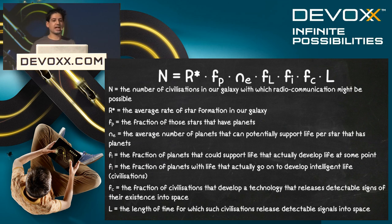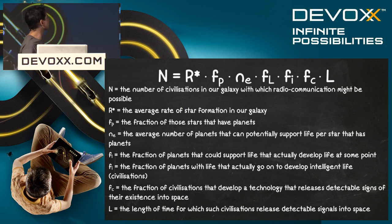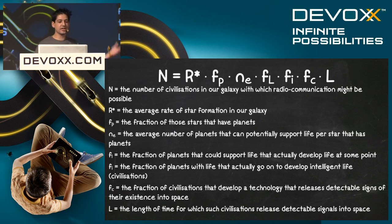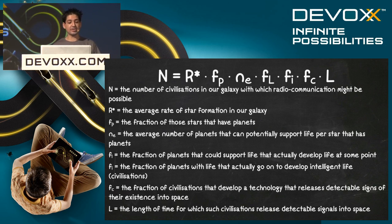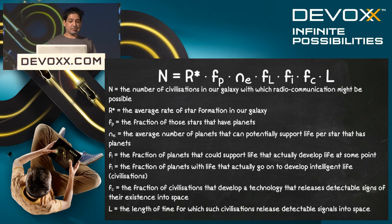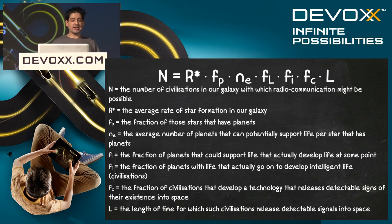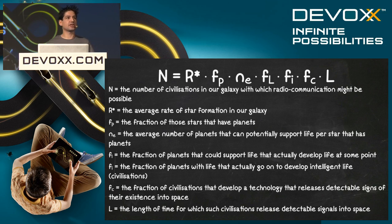A couple of decades ago, they came up with this idea called the Drake Equation — a lovely long string of things. N is the number of civilizations, the rate of stars, and so on. Conservatively, the rate of stars is one a year, number of stars that have planets about half, numbers with planets capable of life about one in five, the planets that develop life let's say 100%, and so on. They came out with an estimate of the likelihood that intelligent life exists in our galaxy that we can contact — between 1,000 and 100 million.